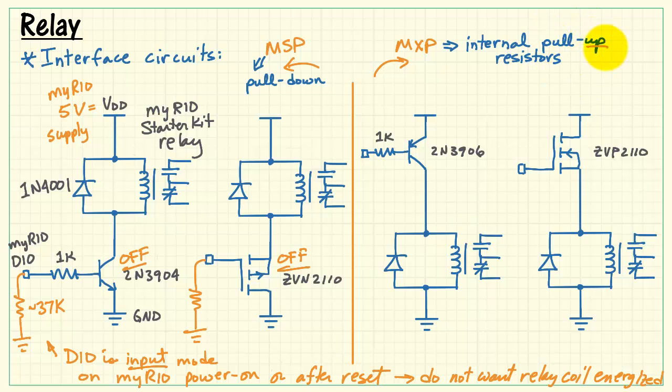Now, as we look at the MXP port with its internal pull-up resistors, these are of essentially the same value as what we had on the MSP side. Those are pulling up to 3.3, 3.1 volts, thereabouts.